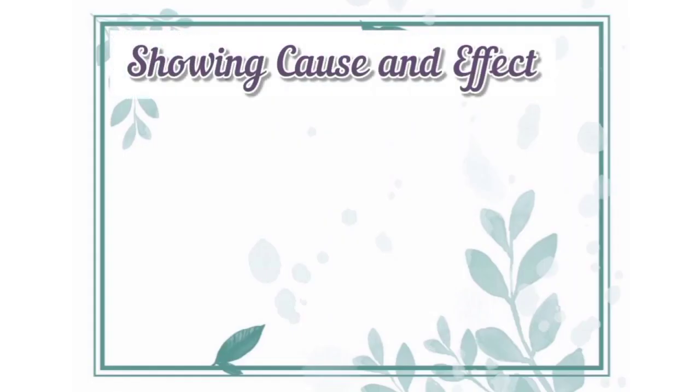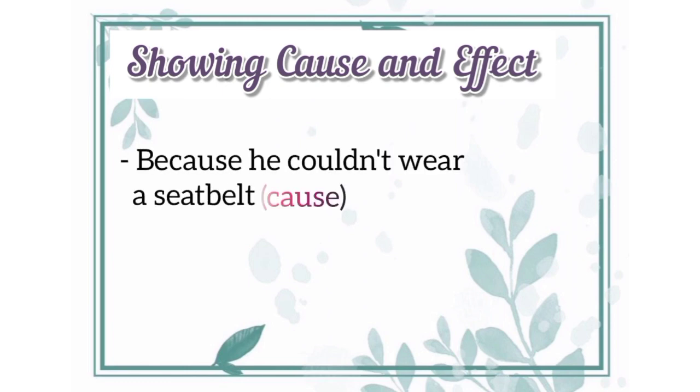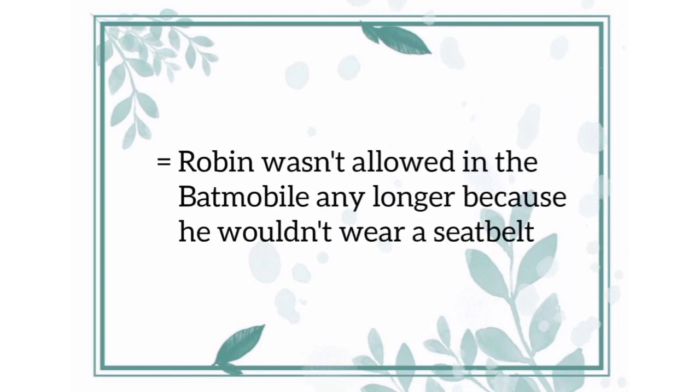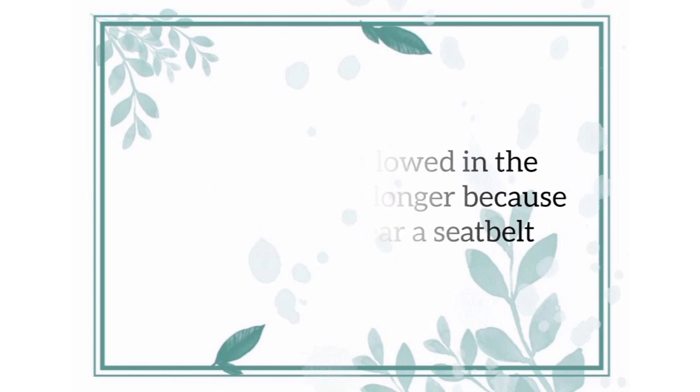Example of showing cause and effect. Because he wouldn't wear a seatbelt as cause, Robin wasn't allowed in the Batmobile any longer as effect. If we put this together, it becomes: Robin wasn't allowed in the Batmobile any longer because he wouldn't wear a seatbelt.